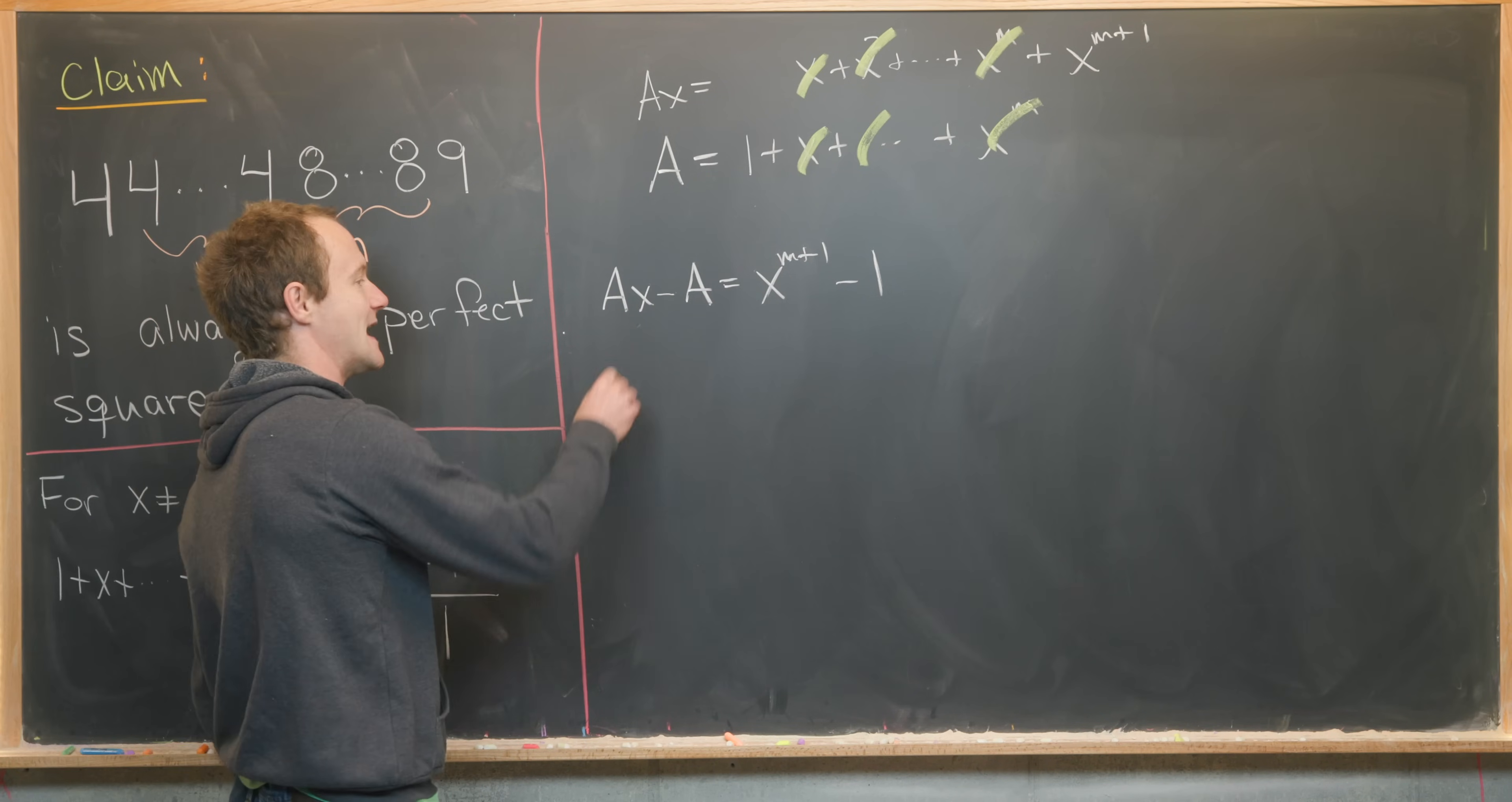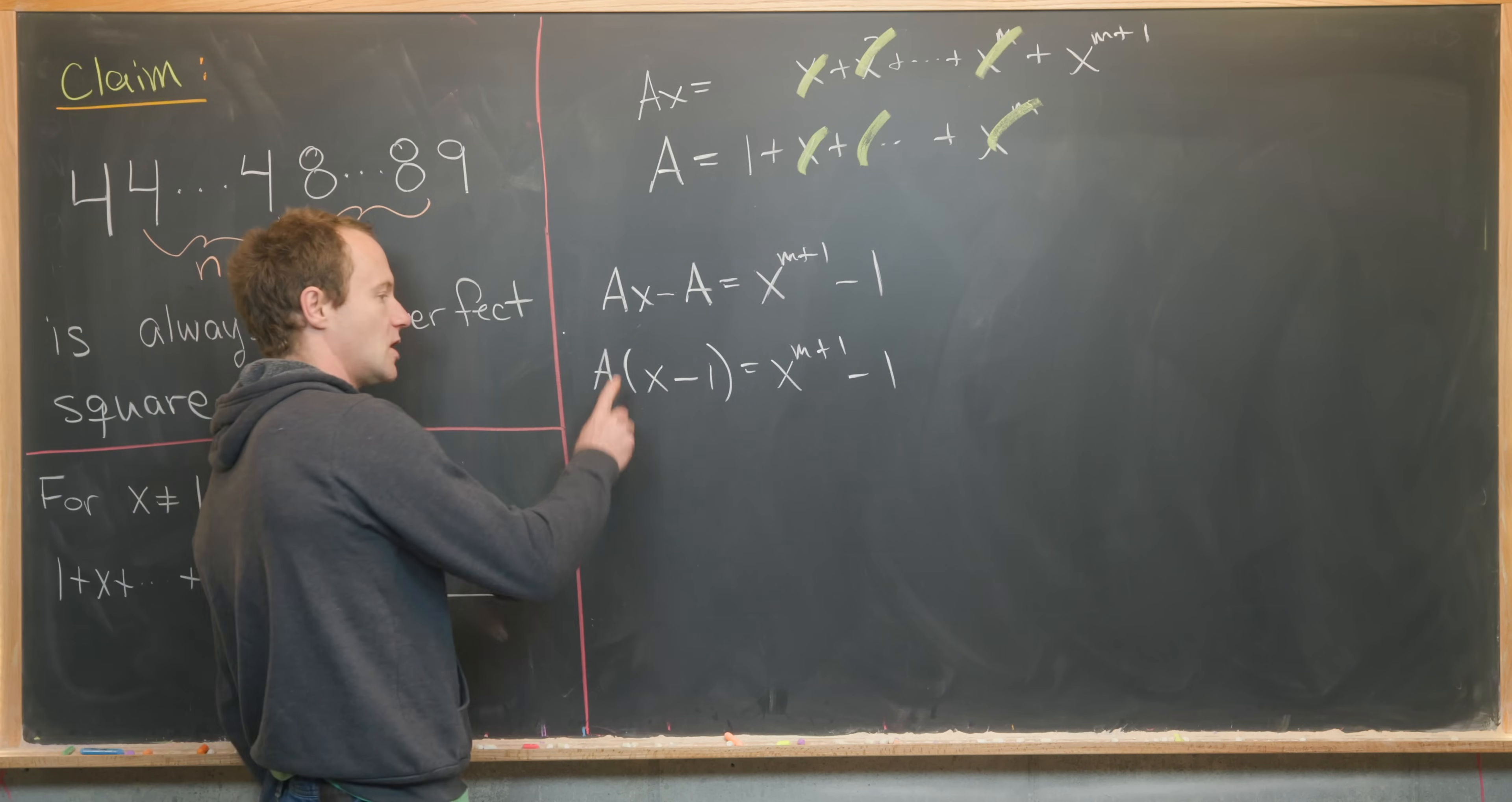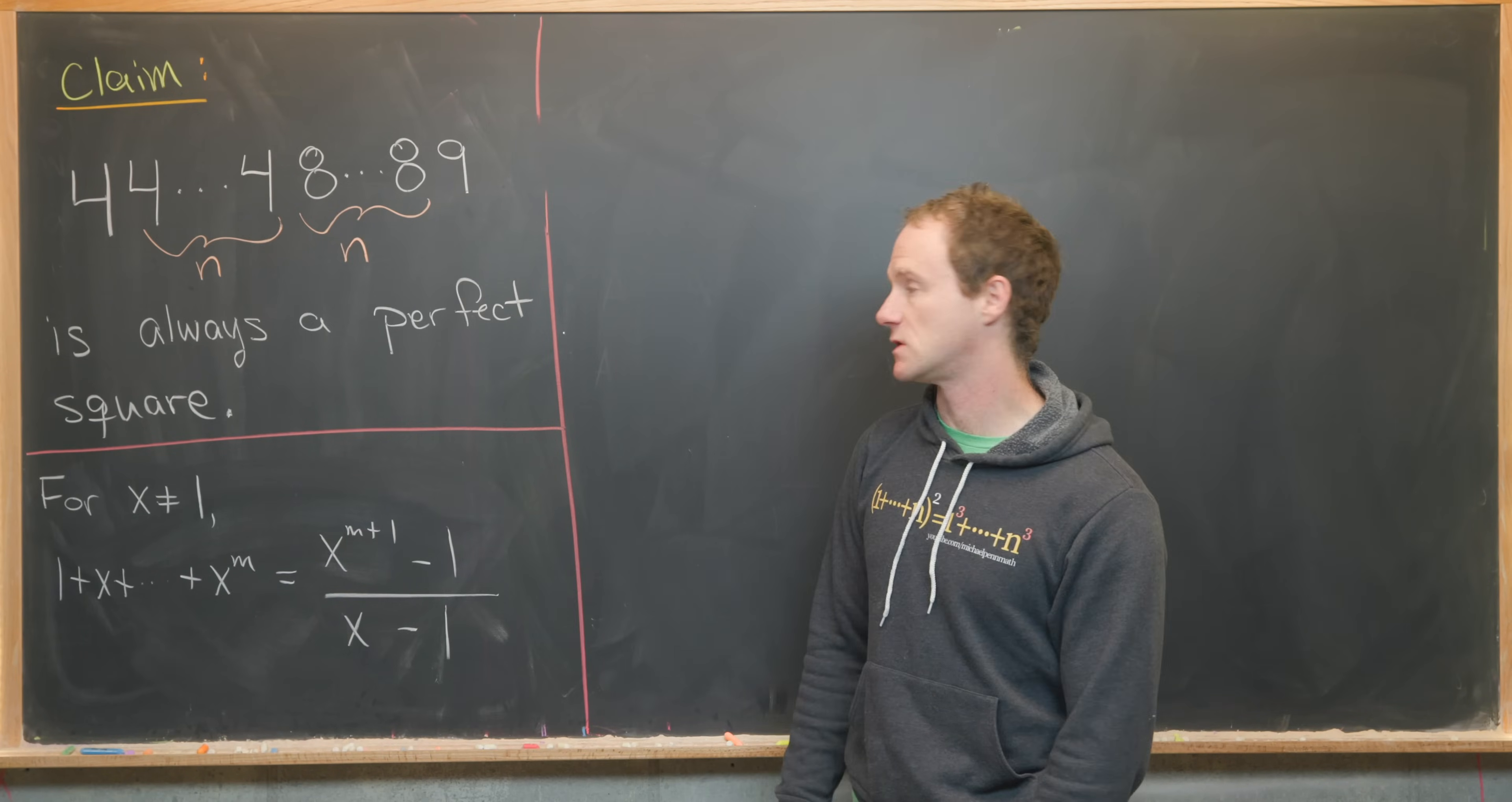Next, we can factor an A out of this left hand side, leaving us with A times x minus 1 equals x to the m plus 1 minus 1. Then we can finish this all off by dividing by x minus 1, leaving us with A is x to the m plus 1 minus 1 over x minus 1. And so we've arrived at this identity. And now we can move on to our main result.